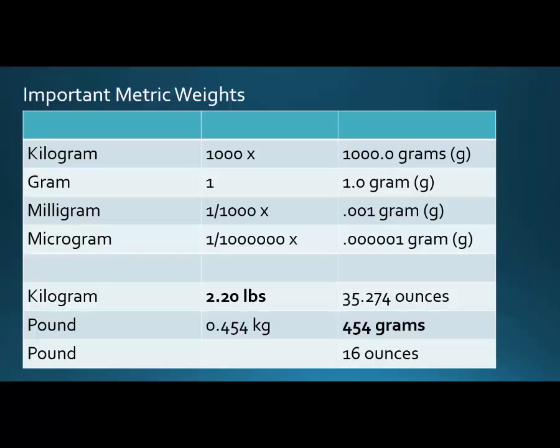Let's start with some important metric weights. The gram is going to be in the middle, the kilogram is bigger than the gram, and the milligram is smaller. If you look at the far right column, a very easy way to move around is to know that if you go from something smaller to something bigger, you move the decimal place to the right. If you go from something bigger to something smaller, you move the decimal place to the left.